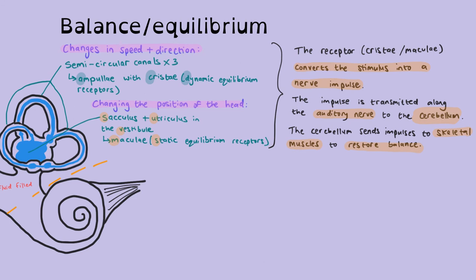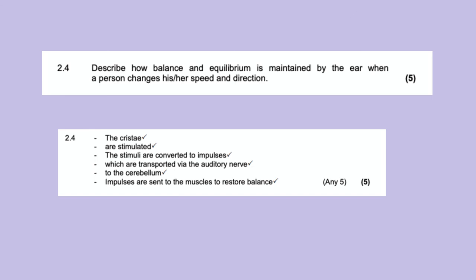That last point is a key point. So your tics would be allocated, looking at the stimulus being converted to an impulse. Impulse is transmitted to the cerebellum along the auditory nerve. Cerebellum sends impulses to skeletal muscles to restore balance. Those are four given marks. Whatever type of balance or equilibrium it is, the key is identifying what kind it is. So let's look at how they word that in finals. It's a very straightforward question.